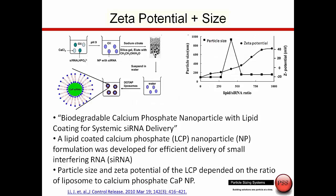The NICOMP can also be used to measure the zeta potential, which is the charge on the surface of the particles. We want to make stable particles, and we usually want to add charge to the surface because if there's a charge on the surface, the particles are less likely to aggregate. This is data from the Journal of Controlled Release.